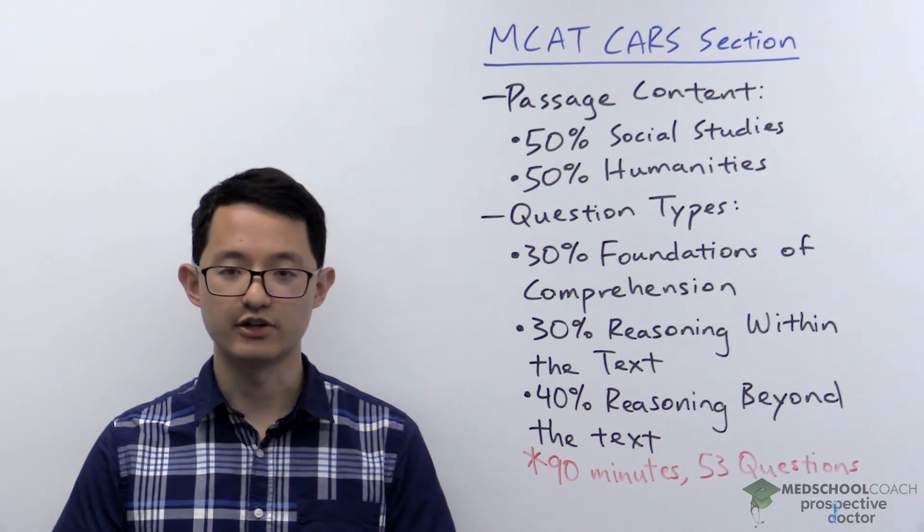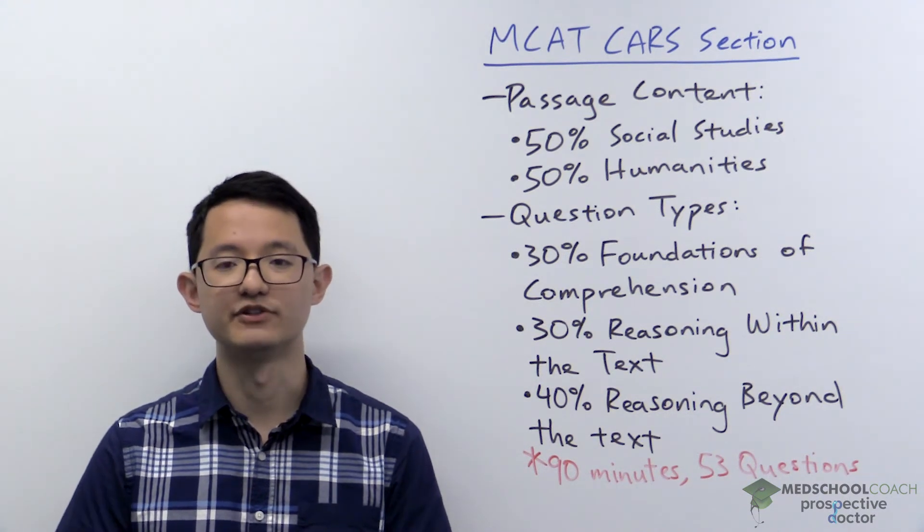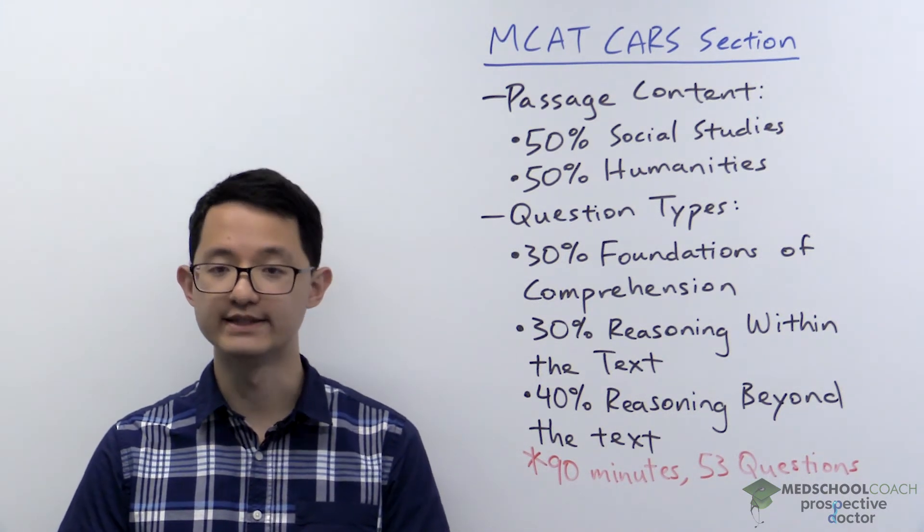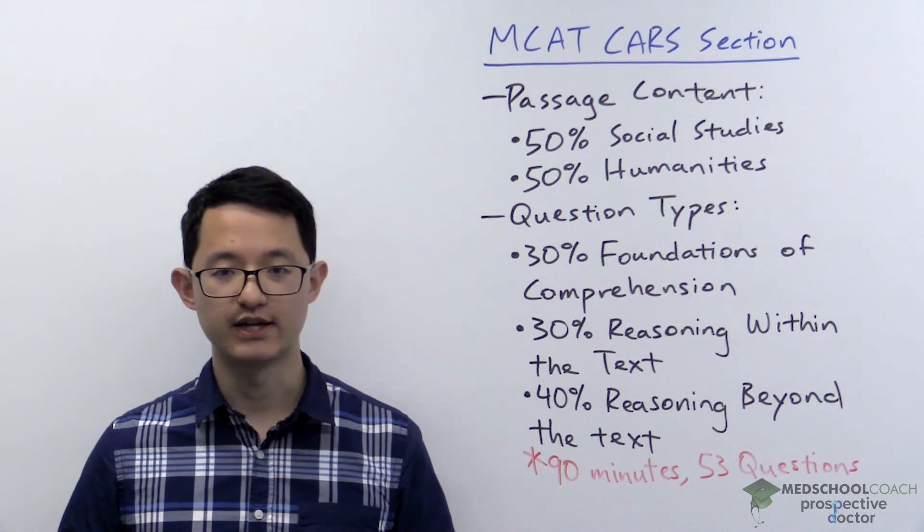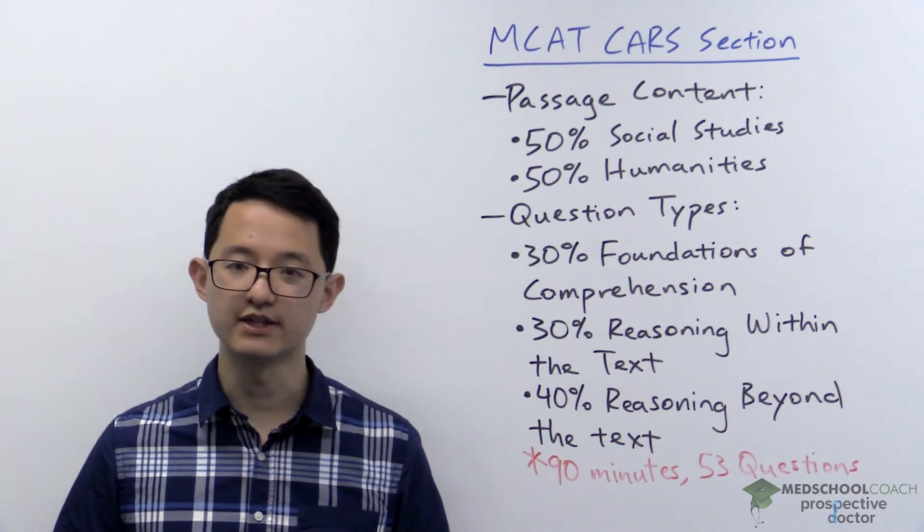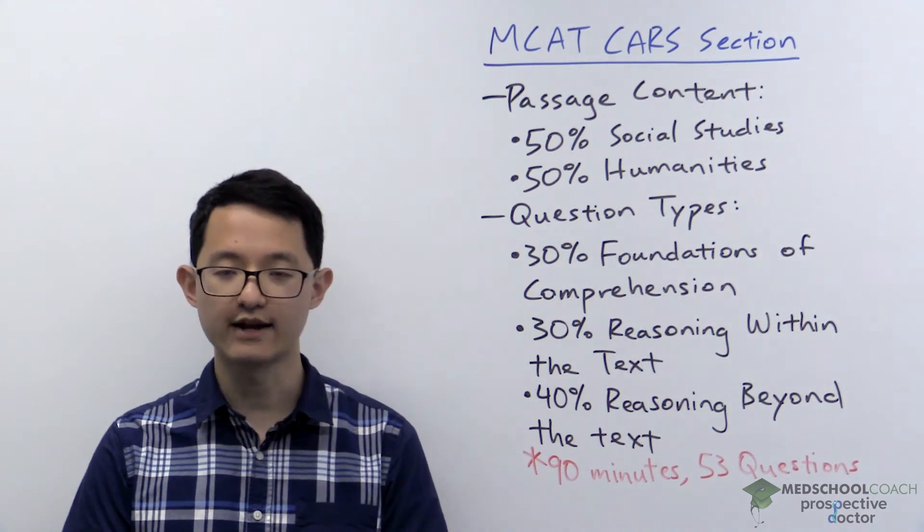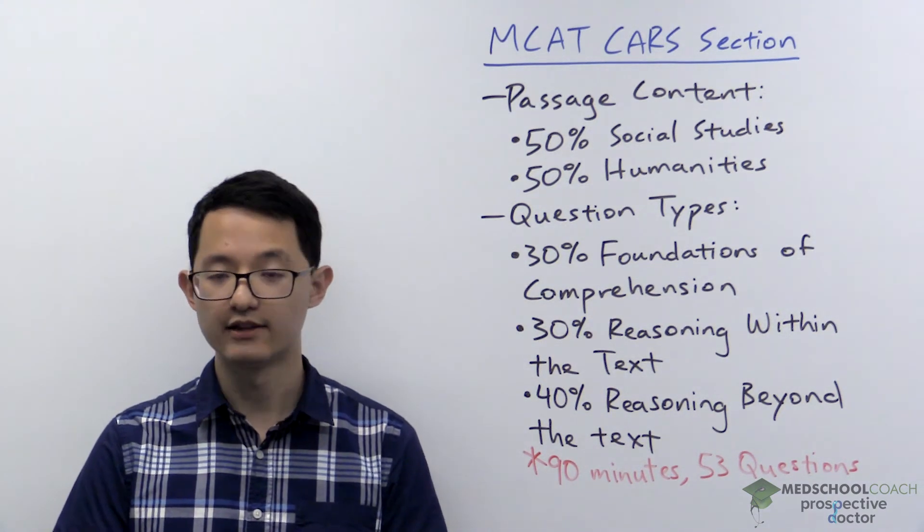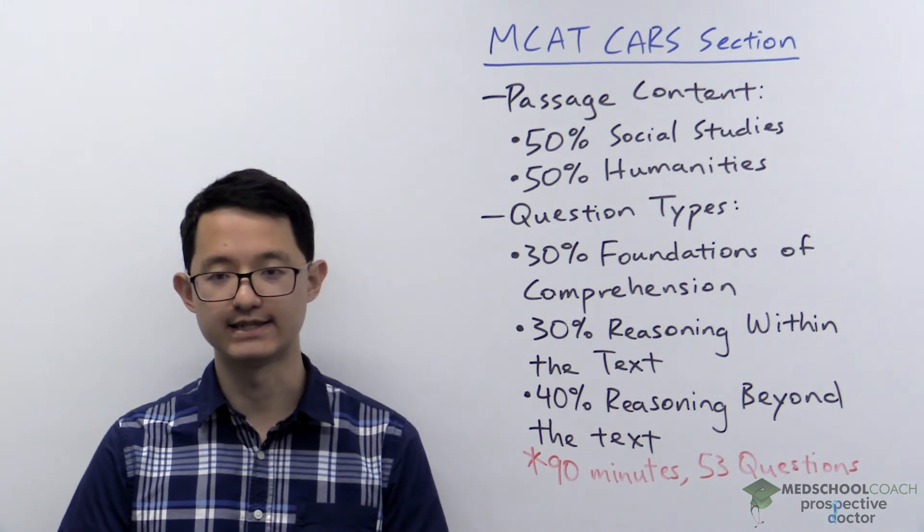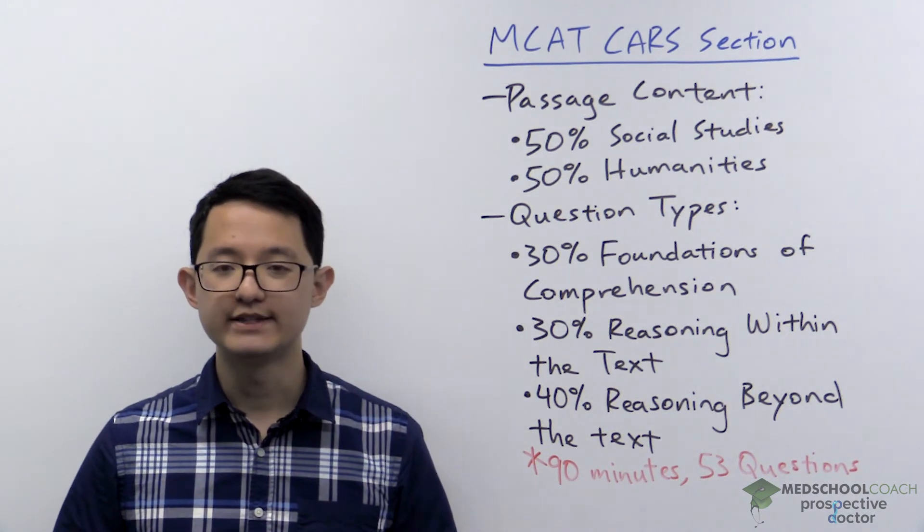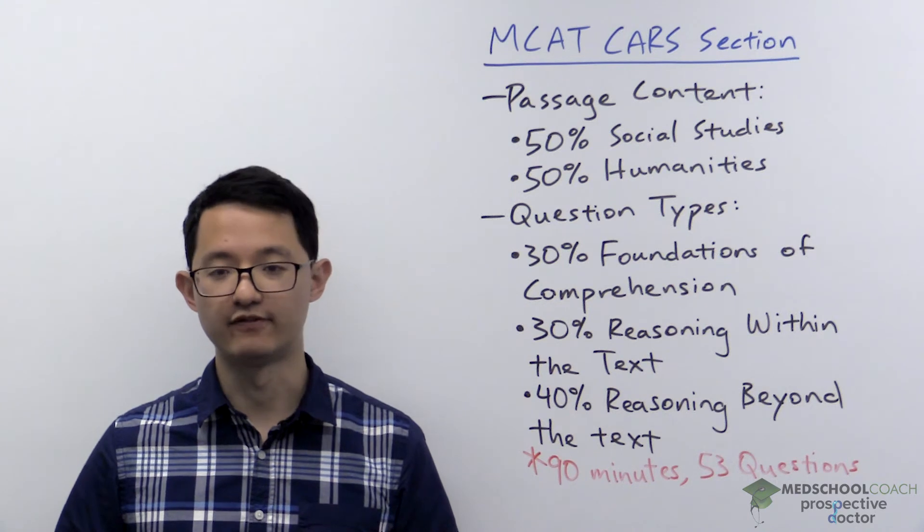Second, another tip is to do practice passages untimed. When it comes to strategies for the MCAT CARS section, there are really two types of strategies. One strategy is to help improve your accuracy on the questions. The other strategy is pacing. And you really need to get the accuracy component down first.